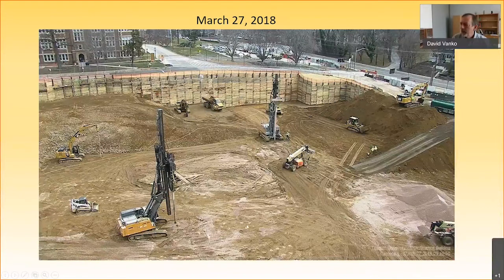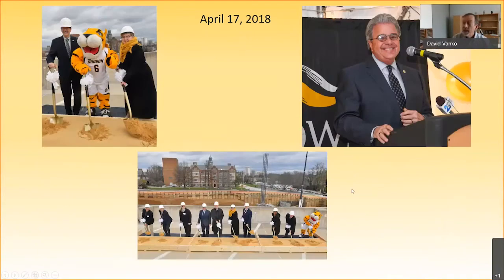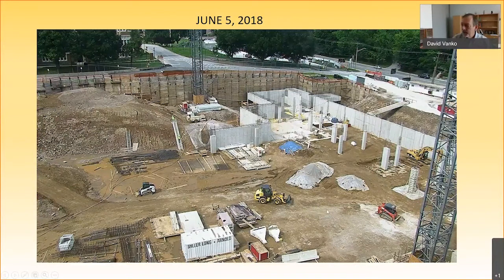By March, the hole is getting down to the level where they're going to start building. Notice these bulkheads — walls that were built to keep it from falling in. Then in April, we actually had our groundbreaking on the roof of the Glen garage. You can see a sandbox, a bunch of folks with shovels, a tiger, the president, and Bob Caret, who came back for the groundbreaking in April of 2018. By June of 2018, we're pouring cement — most of this building is concrete. A lot of rain happened that year and the following year, so the concrete pouring got delayed a little bit, which is part of the reason we're still not fully occupied.